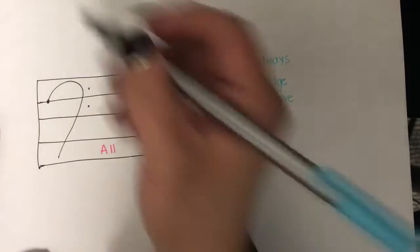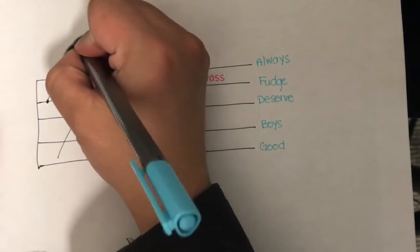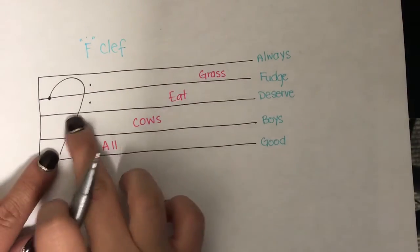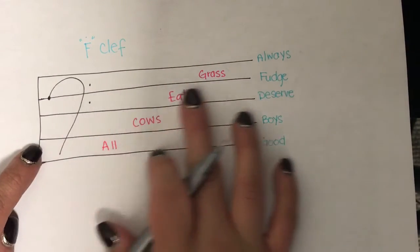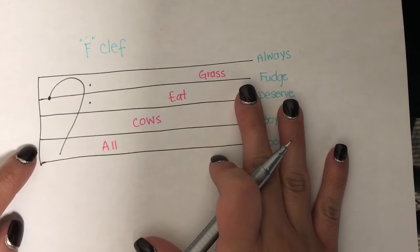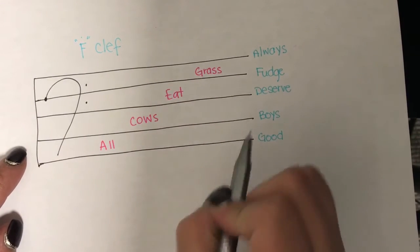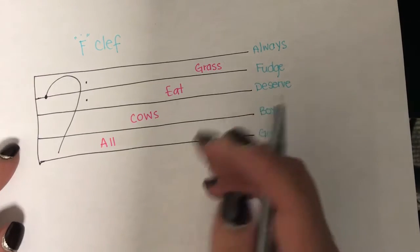Bass clef is also known as the F clef because the way that it's written, these two dots surround F, the F line. Treble clef is known as the G clef because the little swirl surrounds the G line.